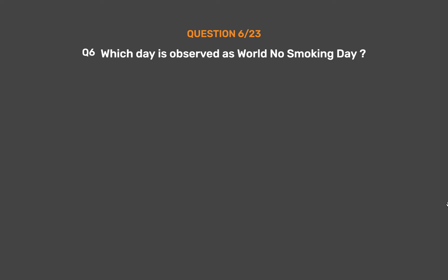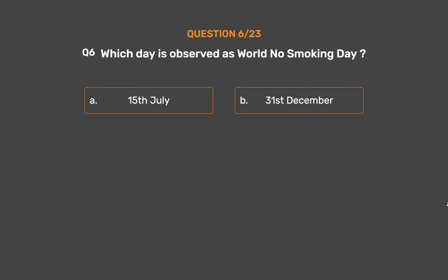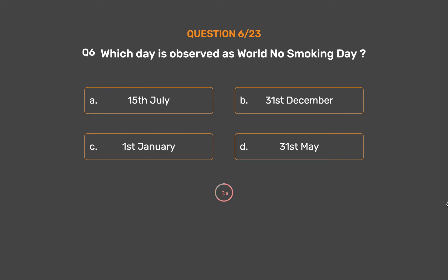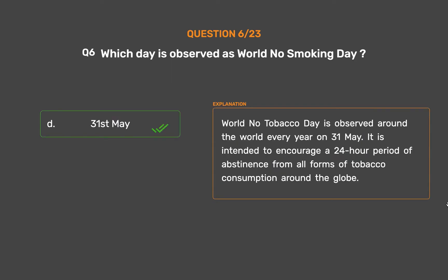Question No. 6. Which day is observed as World No Smoking Day? Option A, 15th July; Option B, 31st December; Option C, 1st January; Option D, 31st May. World No Tobacco Day is observed around the world every year on the 31st of May. It is intended to encourage a 24-hour period of abstinence from all forms of tobacco consumption around the globe.